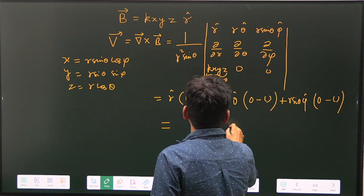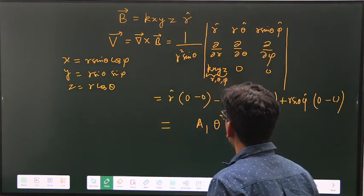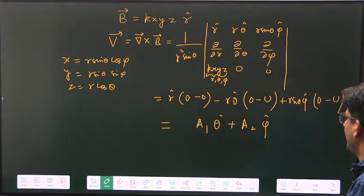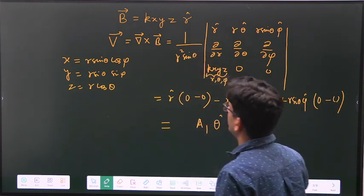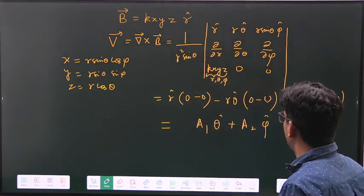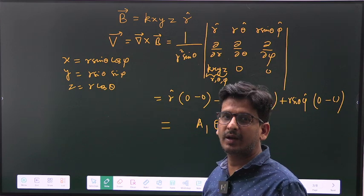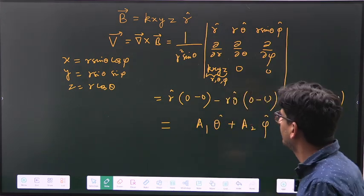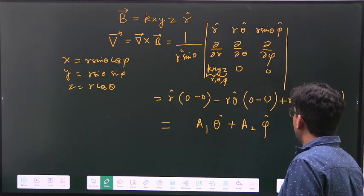So that means your answer will be something like A1 theta cap plus A2 phi cap. It will be function of some theta cap and phi cap, which is obviously perpendicular to R cap. Because you know all three vectors are unit vectors of a spherical polar coordinate - they are mutually perpendicular.